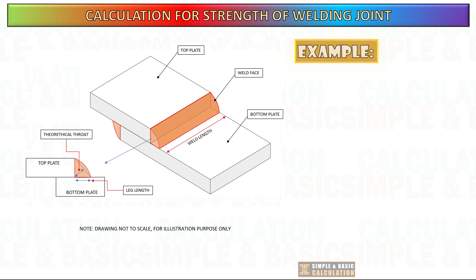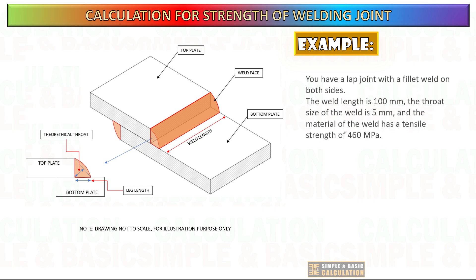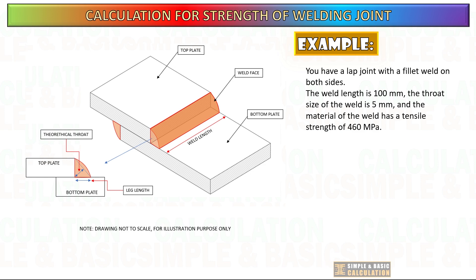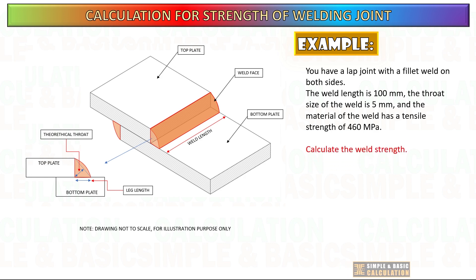Example: You have a lap joint with a fillet weld on both sides. The weld length is 100 mm, the throat size of the weld is 5 mm, and the material of the weld has a tensile strength of 460 MPa. Calculate the weld strength.